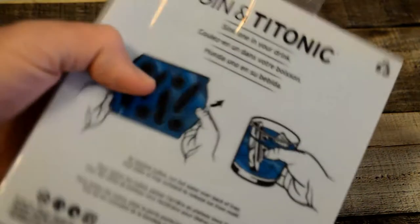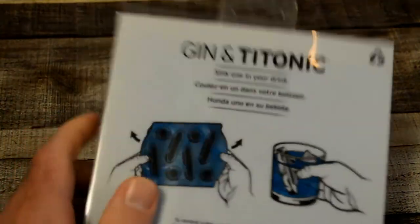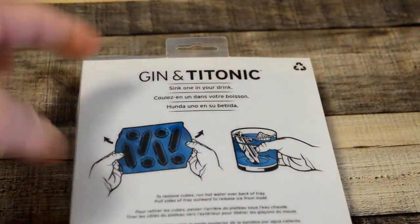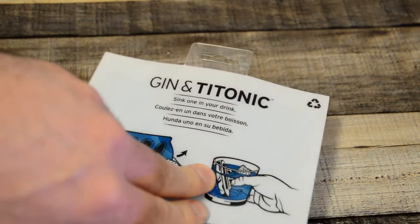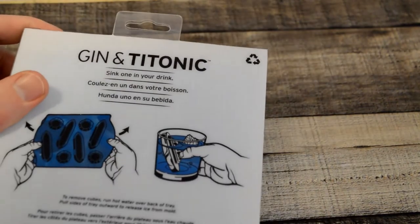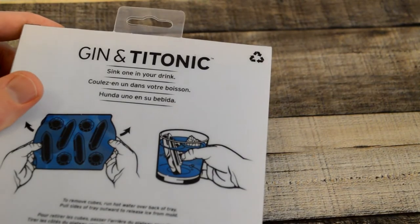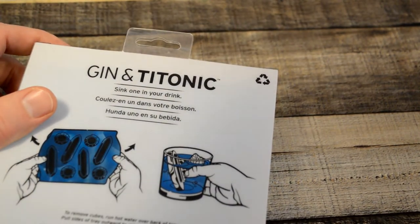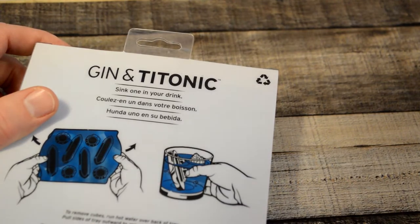Yeah, check this out. It's pretty unique. If you look at it, you have an iceberg and a ship. And so the ship kind of looks like it's sinking. The iceberg floats on top, according to the picture. Sink one into your drink. To remove cubes, run hot water over the back of the tray. Pull sides of the tray outward to release the ice mold.